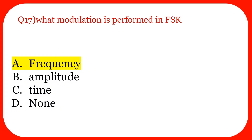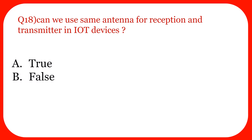Question eighteen: Can we use the same antenna for both reception and transmission in IoT devices? The answer is true. When a single antenna is used as both transmitter and receiver, it is called monostatic. When two different antennas are used, it is called bistatic.